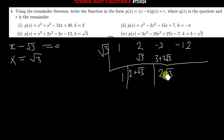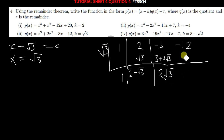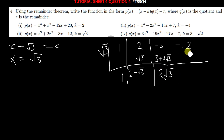Then you multiply root 3 times (2 plus root 3): root 3 times root 3 is 3, and root 3 times 2 is 2 root 3, so altogether that gives 2 times 3, which is 6. When you add negative 12 and 6, you're going to get negative 6. So our remainder is negative 6.